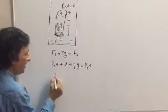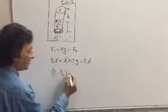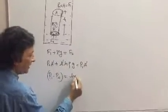Now A gets cancelled, so P1 minus P0—because A gets cancelled—is equal to H·ρ·g.